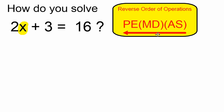First, in order to undo what's been done to x, I'm going to undo addition and subtraction by subtracting 3 on the left hand side. And because I do it on the left, I also have to do it on the right hand side.